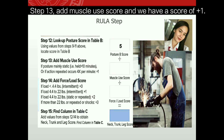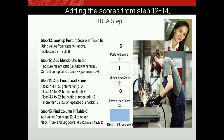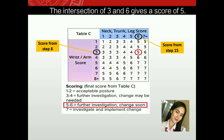Step thirteen adds the muscle use score, giving a plus one. Step fourteen adds the force and load score, giving a zero. Adding the scores from steps twelve to fourteen gives the neck, trunk, and leg score of six. Going back to Table C, we circle the neck, trunk, and leg score of six. The intersection of three and six gives a score of five.